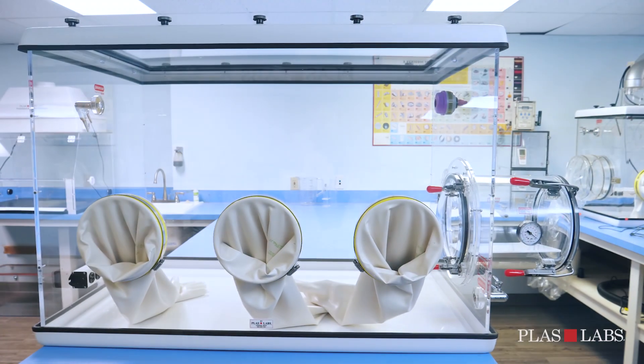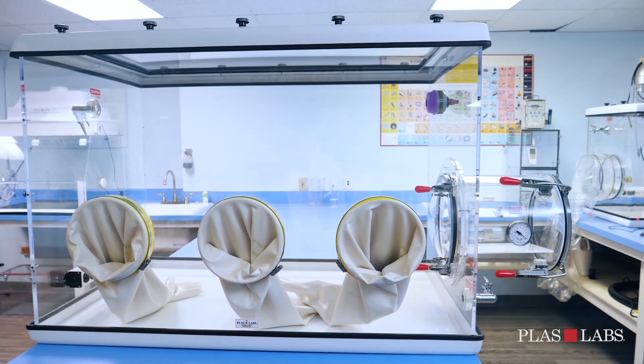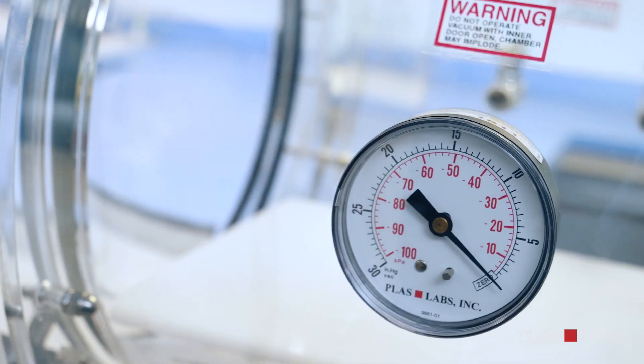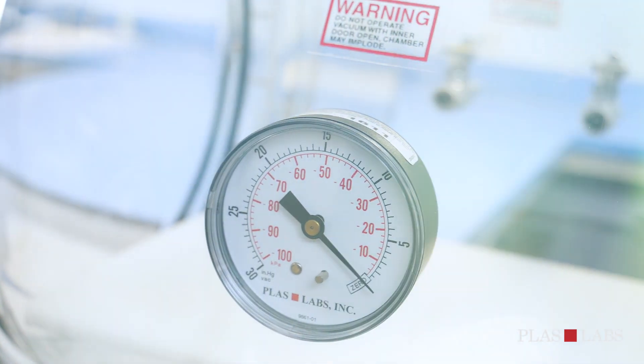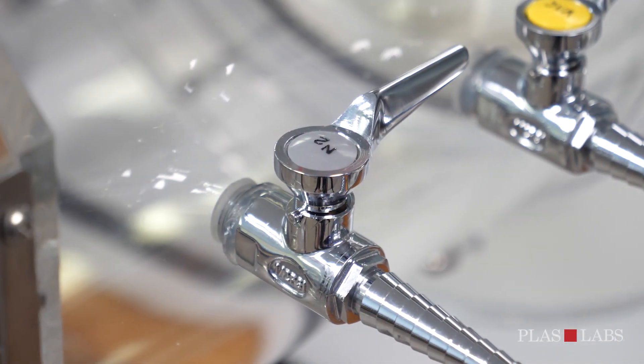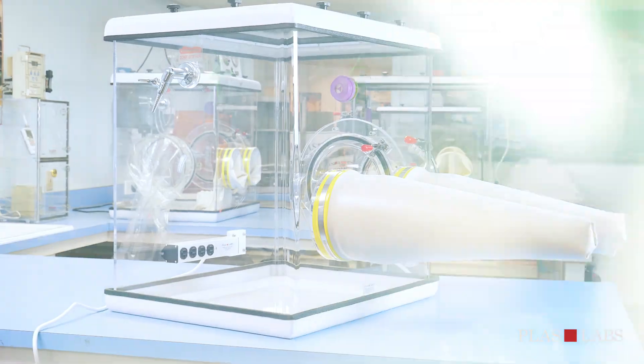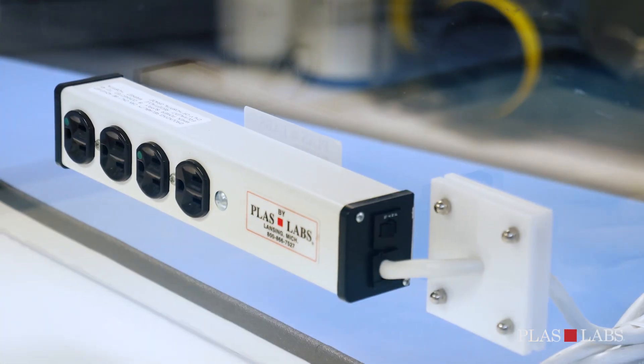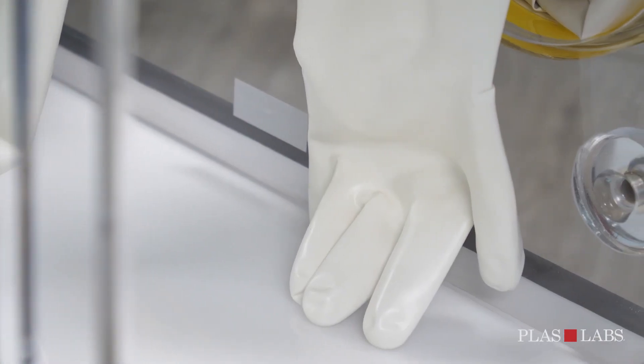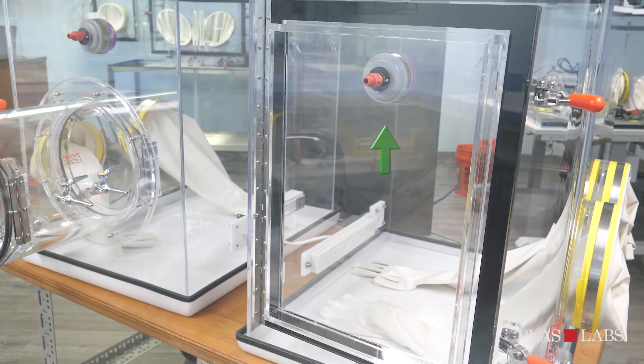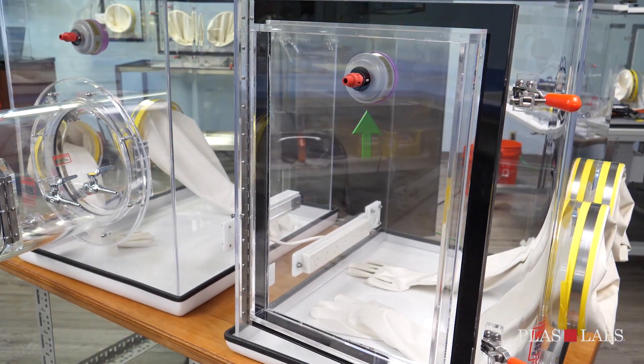Each 830 series glove box comes standard with transfer chamber with purging valves, pressure gauge, and leveling tray, two purging valves on the main chamber, removable top, electrical outlet strip, white ambidextrous hypalon material gloves, and small pressure relief pop valve with a small HEPA filter.